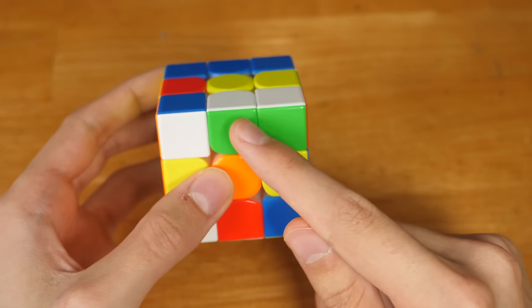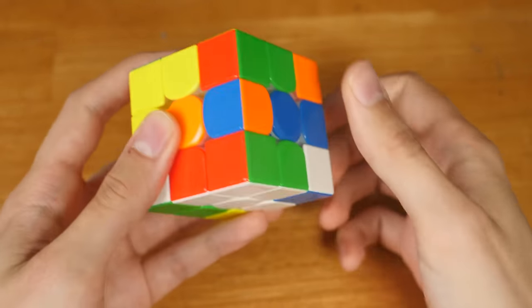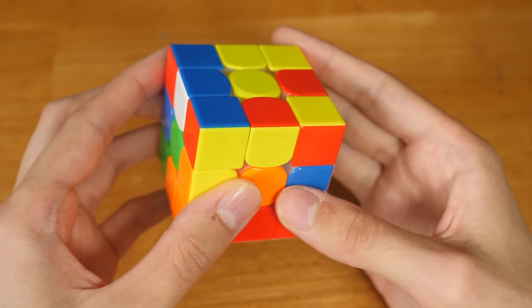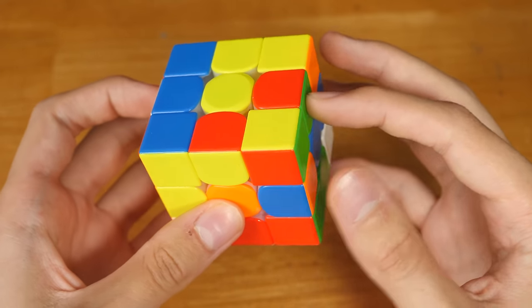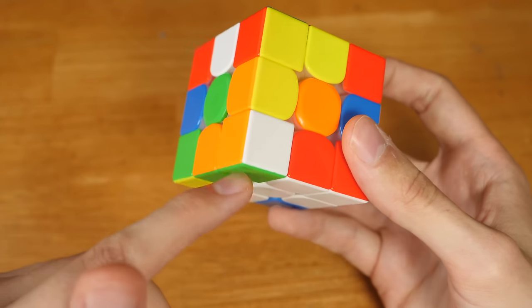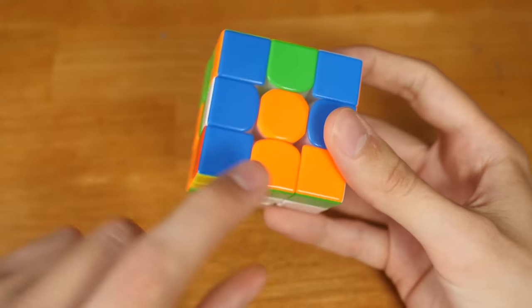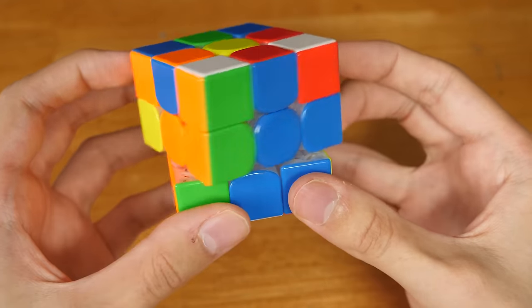So starting by solving this block and bringing the edge up, solving these three relatively, and setting up an X-cross. Now inserting this final cross edge while inserting this edge here, and preserving this pair. Inserting the edge, preserving the pair, and inserting the final cross piece.